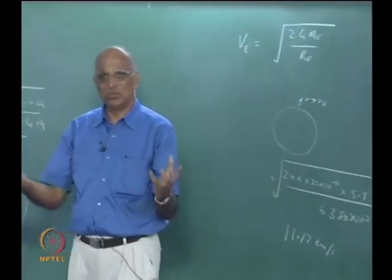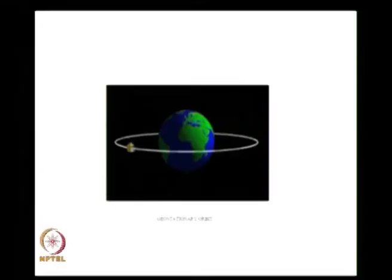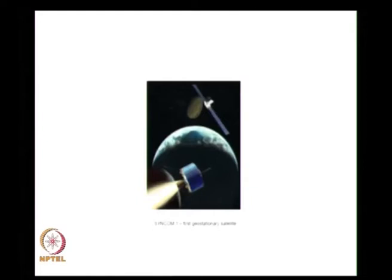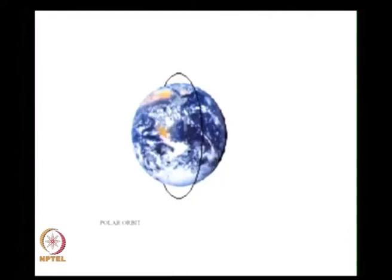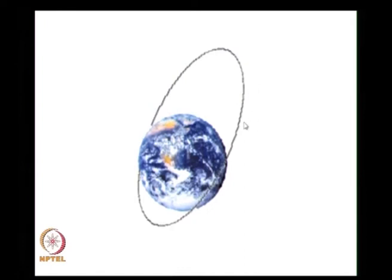Retrograde orbits are nowhere used because why should you go against the Earth's rotation and get no benefit. The first geostationary satellite launched by the US was not successful, but the second one was successful on 26 July 1963 and it relayed the Tokyo Olympics. This shows a polar orbit - you go from north to south - and this angle is not really 90 degrees but a little more. This shows highly elliptical orbits - this is the perigee, this is the apogee. For the Molniya orbit, the apogee distance is something like 42,000 km and the perigee around 6,000 km.